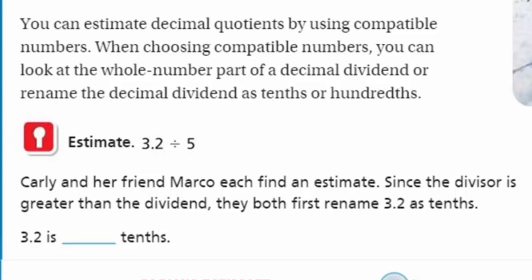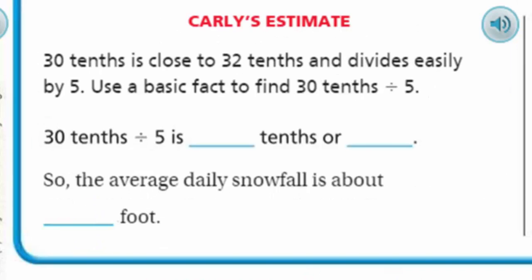It says estimate 3.2 divided by 5. Carly and her friend Marco each find an estimate. Since the divisor is greater than the dividend, they both first rename 3.2 as tenths. So 3.2 is going to be equal to 32 tenths. Carly's estimate: she said 30 tenths is close to 32 tenths and divides easily by 5. Use a basic fact to find 30 tenths divided by 5. That's going to equal 6 tenths or 0.6. So the average daily snowfall is about 0.6 foot, which is about a half a foot, about six inches.